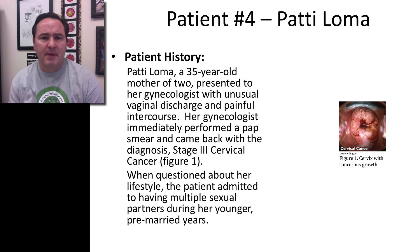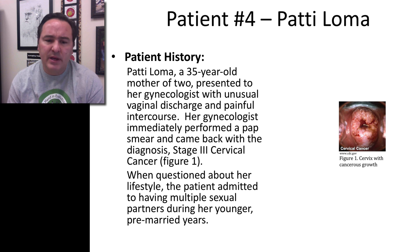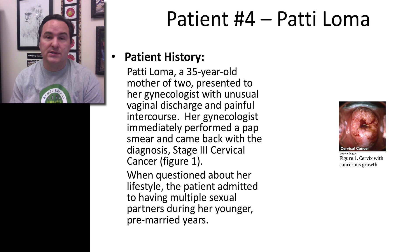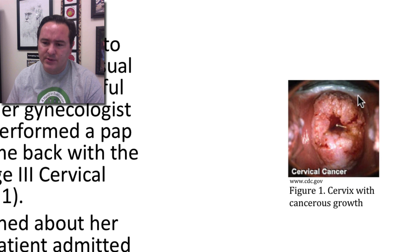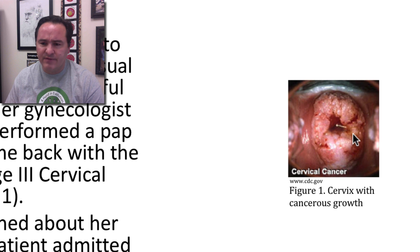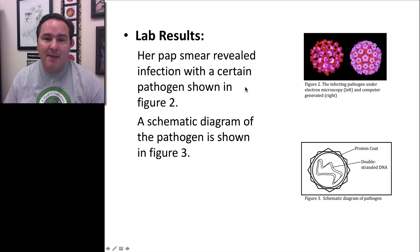Next patient, patient number four, Patty Loma. Patty Loma was a 35-year-old mother of two who presented to her gynecologist with unusual vaginal discharge and complained of painful intercourse. Her gynecologist immediately performed a pap smear and came back with this diagnosis: stage 3 cervical cancer. Furthermore, there was a cancerous growth that seemed to also have some types of infections on it as well. When questioned about her lifestyle, she admitted to having had multiple sexual partners during her young pre-married years. They performed a pap smear and this revealed infection with a certain pathogen.